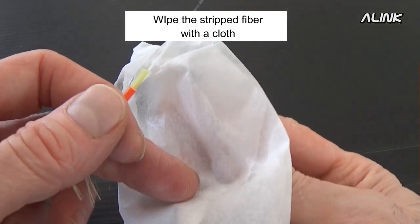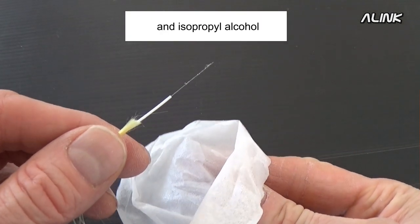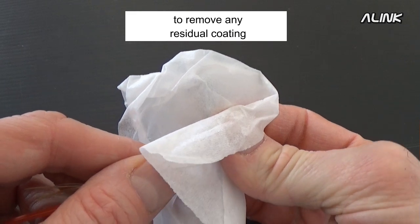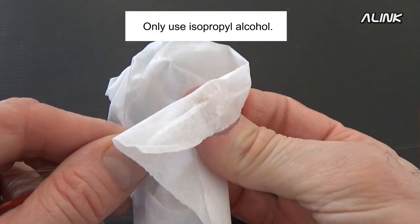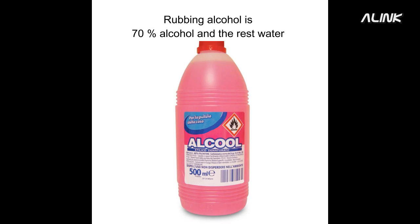Wipe the stripped fiber with a cloth and isopropyl alcohol to remove any residual coating. Only use isopropyl alcohol. Rubbing alcohol is 70% alcohol and the rest water.